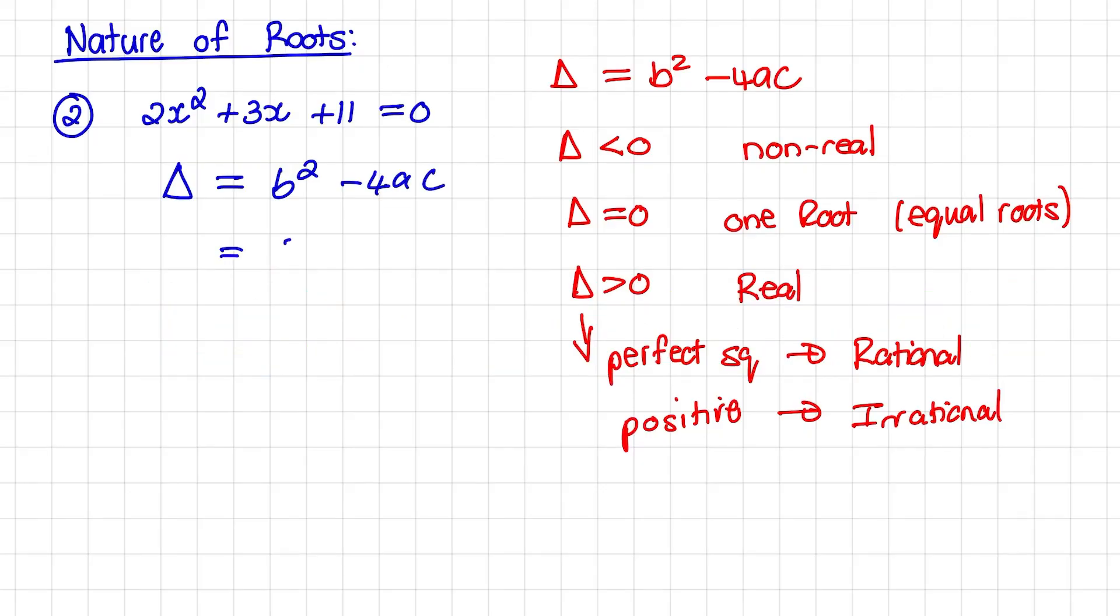Where b squared is 3 squared minus 4 times 2 times 11. The answer equals negative 79.